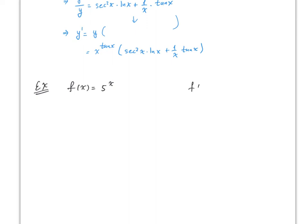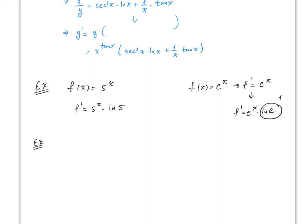What about functions like φ^x where the base is not e? The derivative of φ^x is φ^x · ln(φ). This is similar to d/dx[e^x] = e^x, but you need to multiply by ln(φ). Notice that technically d/dx[e^x] = e^x · ln(e) = e^x, since ln(e) = 1. With the chain rule: if f(x) = φ^(4x), then f′(x) = φ^(4x) · ln(φ) · 4 = 4·φ^(4x)·ln(φ).